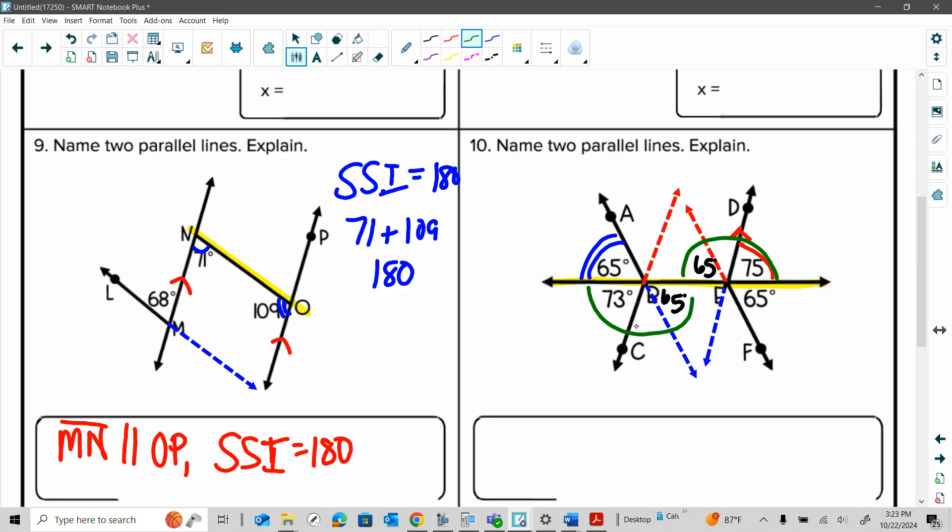So we have two different measures here. But on this one we're looking at the 73 and the 65. And then I'm going to subtract that from 180. So this one over here would be 42. But this one, because I have 65 and 75, that's already 140. So that means this one would be 40. So that is going to help you kind of distinguish between the ones that are going to end up being parallel.